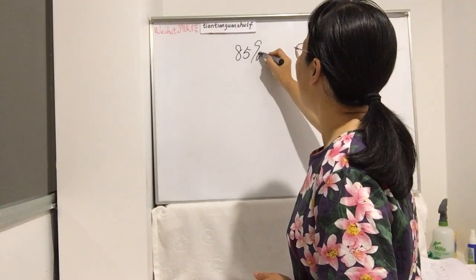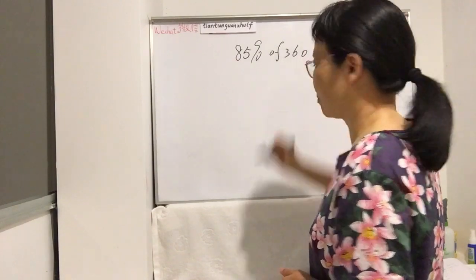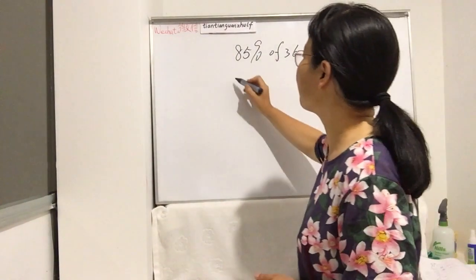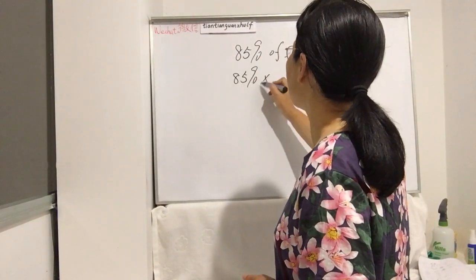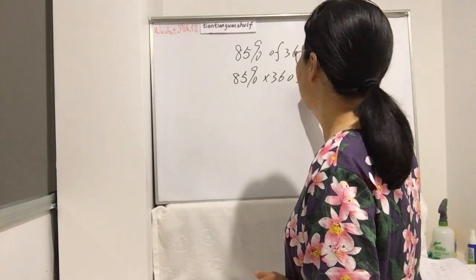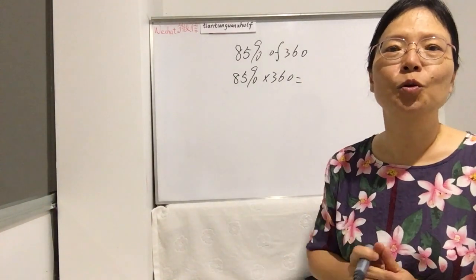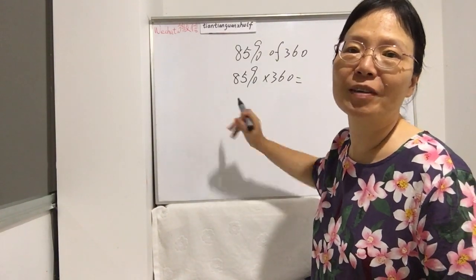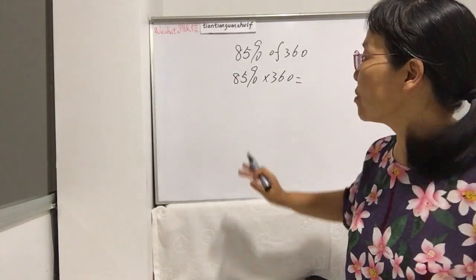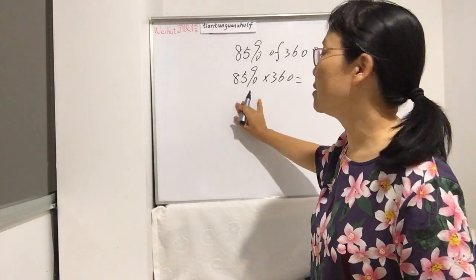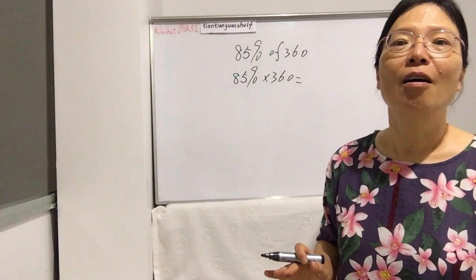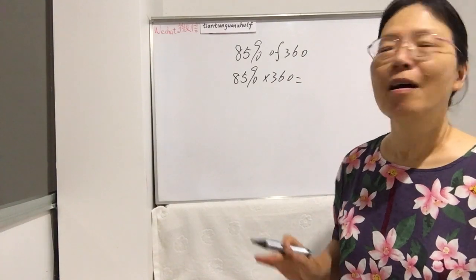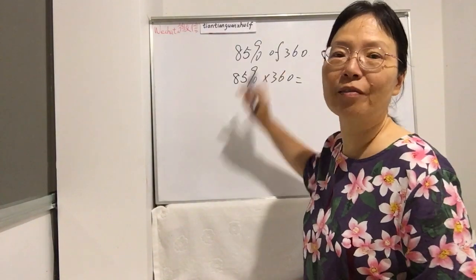85% times 360. You have two ways to think about 85%: one, you can use 100% minus 15% equals 85%. The other way, you can use 50% plus 35%, or 50% plus three times 10% plus 5%.